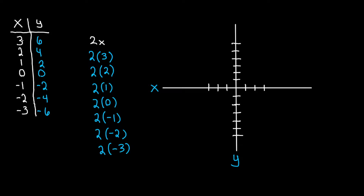These are our points. Three on the x-axis, six on the y — so (3, 6) is our first point. Go across three points on our x and then up six points on our y-axis. Our next point is (2, 4) — go across two on our x, up four on our y-axis. Now we have (1, 2) — across one, up two.